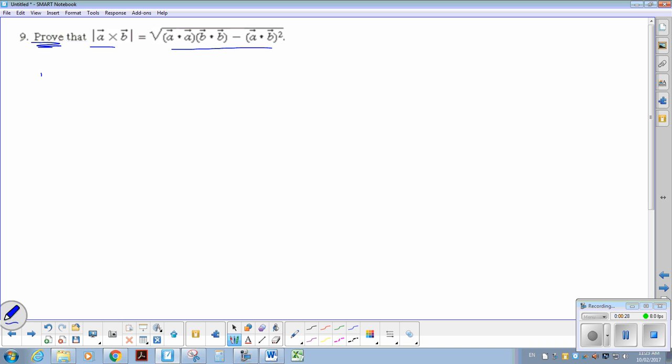My left side is equal to the magnitude of A cross B. And then the right side, so RS, right side, equals the square root of A dot A, B dot B, minus A dot B, all squared.